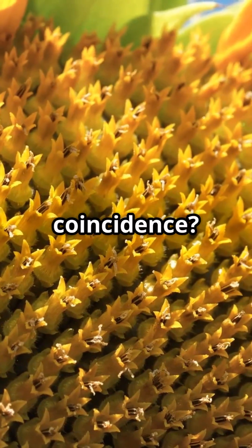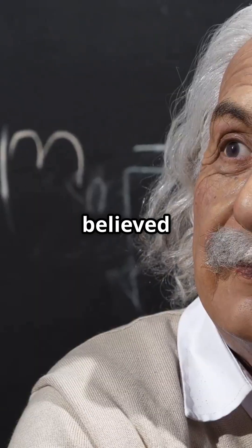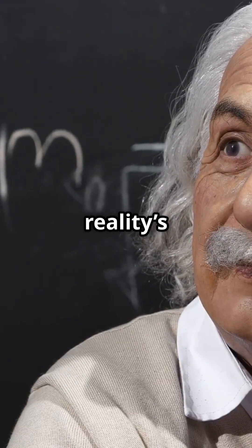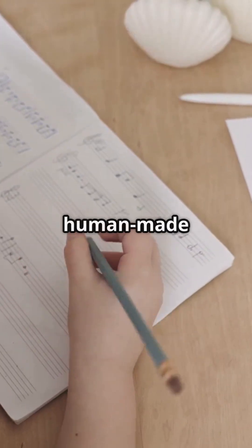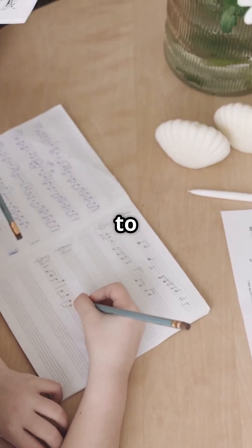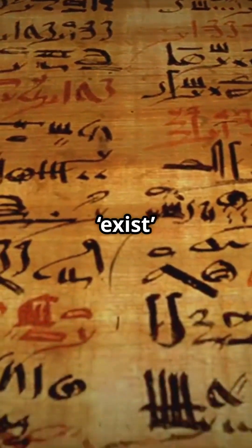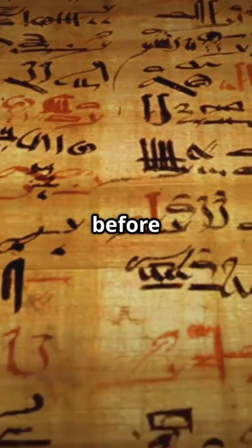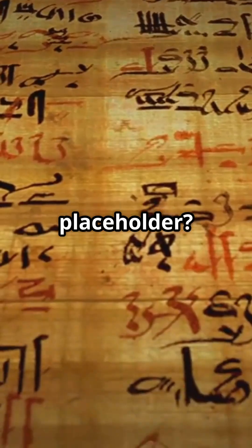Einstein believed math described reality's blueprint. Is math a human-made system like laws or music notation, or is it something intrinsic to reality? Did zero exist before India invented it as a placeholder?